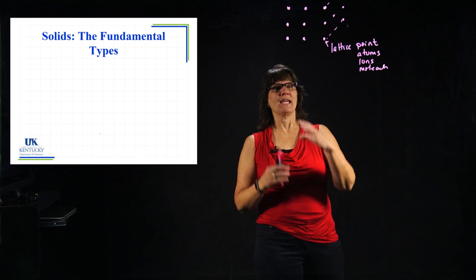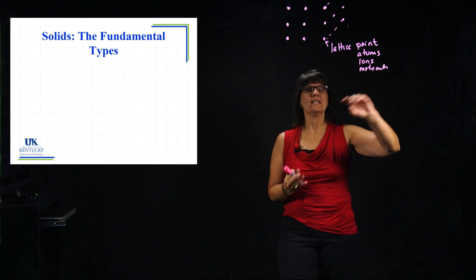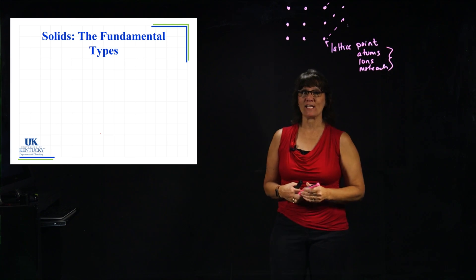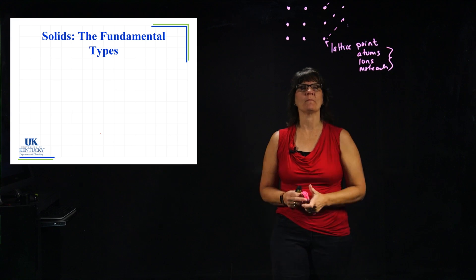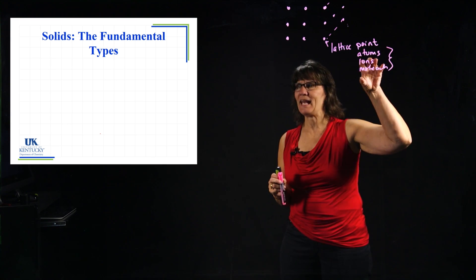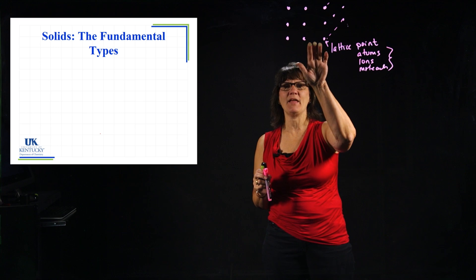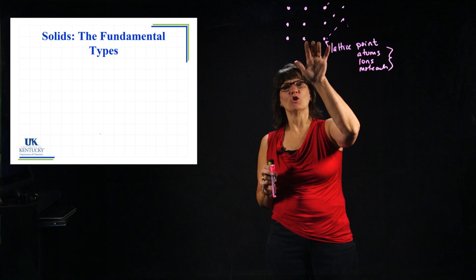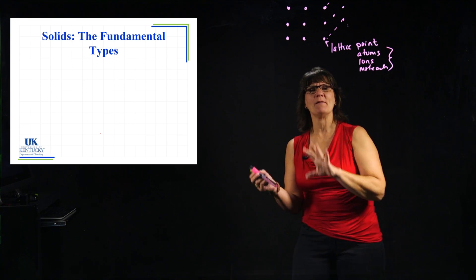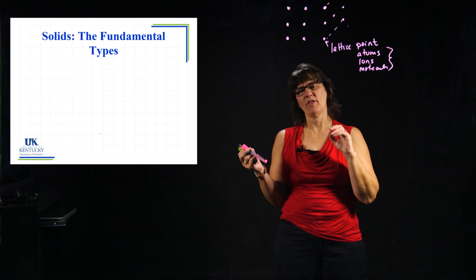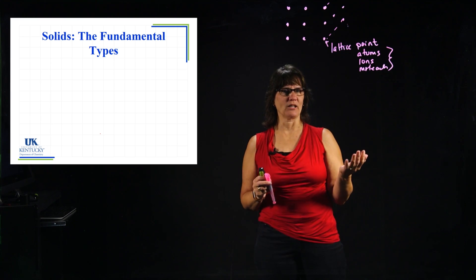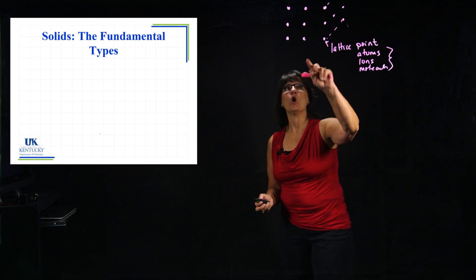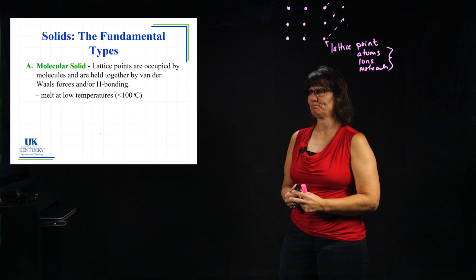Crystalline solids can be categorized into various categories depending upon what is sitting at those lattice points. Depending on what's sitting there and what's holding them together so that they stay in the solid phase, we'll give it certain properties — properties like melting point, whether it's low or high, and whether they conduct electricity. All dependent upon what sits at these lattice points.